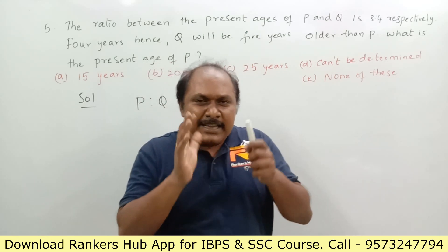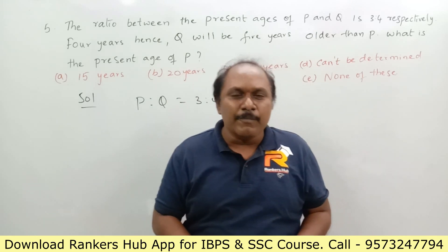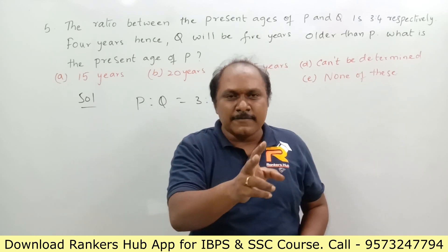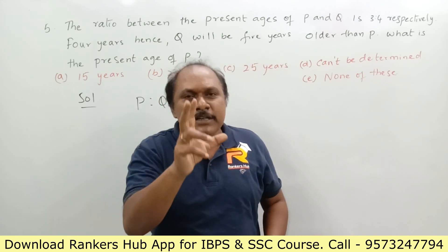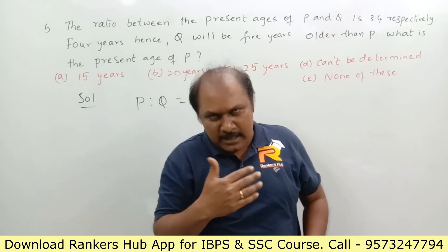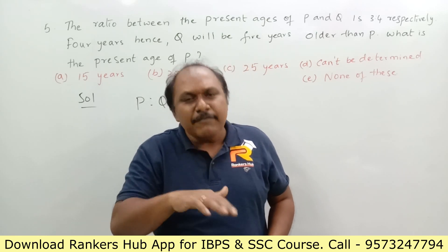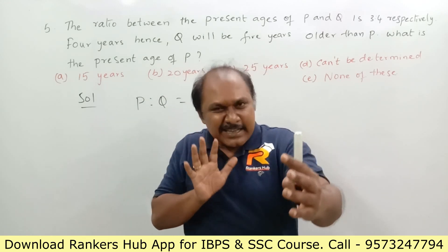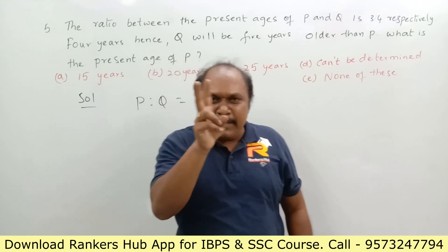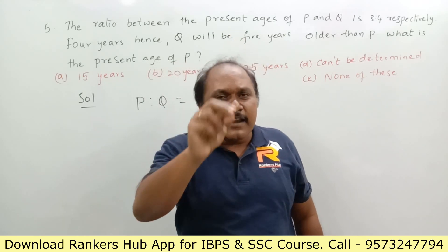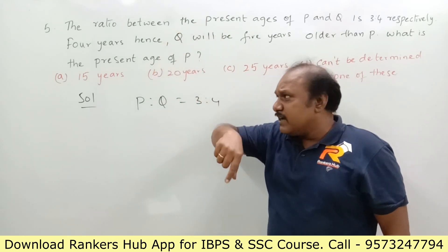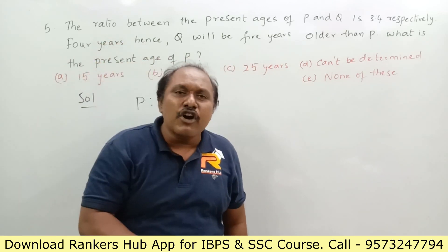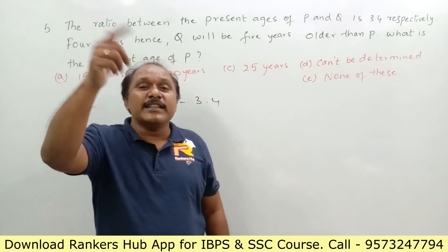Think about what remains constant between the ages of two persons. If the age difference between two people is 10 years, after 5 years the difference is still the same. The difference in age between two persons always remains the same. So if after 4 years Q is 5 years older than P, then at present also Q is 5 years older than P.